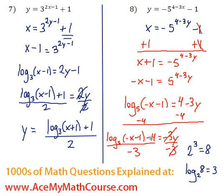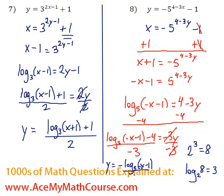You can even break this down further: negative 4 divided by negative 3 is just 4 over 3. So an alternative way of writing this is negative log base 5 of (negative x minus 1), all over 3, plus 4 over 3. And that's it.